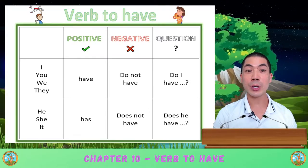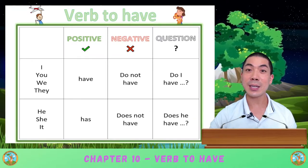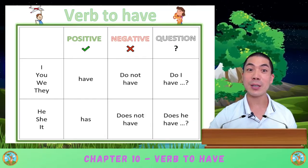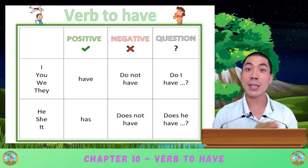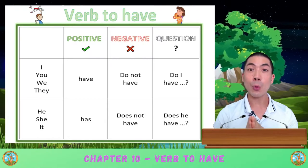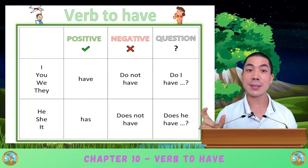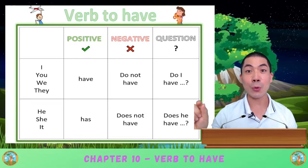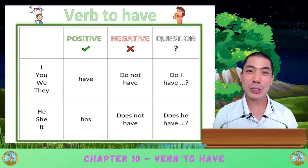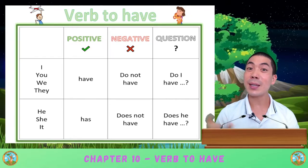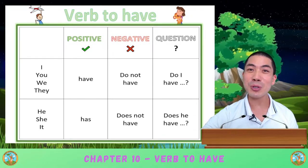For he, she, and it, we use 'has' for positive. He has a dog. She has a dress. For negative, we say 'does not have'. Why do we use 'have' instead of 'has'? It's because the S is taken away from the 'has' and goes to the 'does'. And for the question form, we say 'Does he have a dog? Does she have a blue dress?'